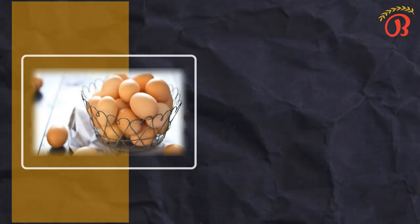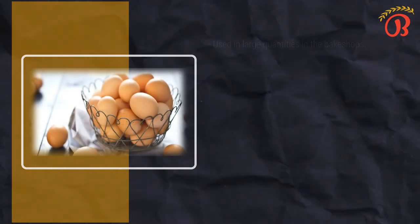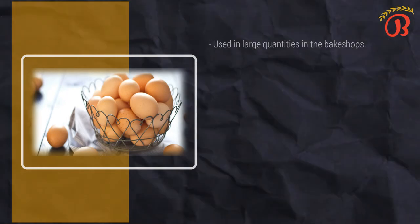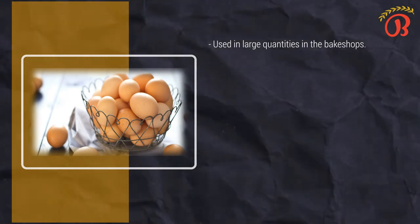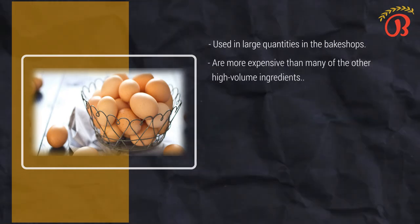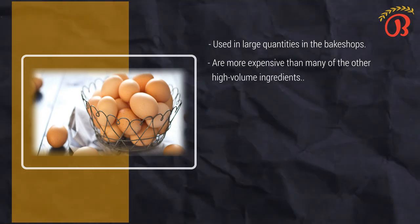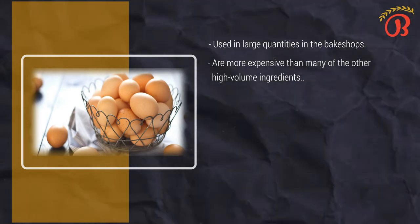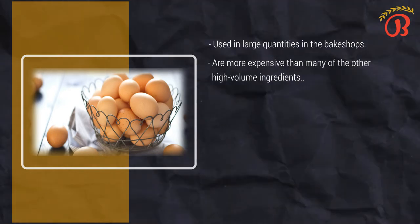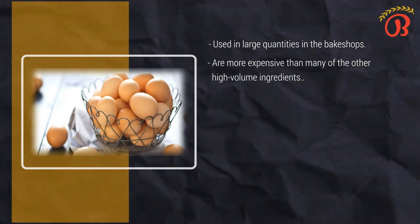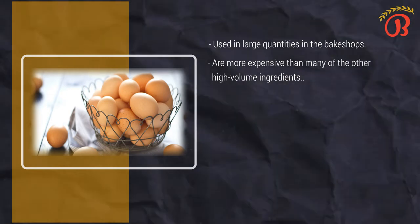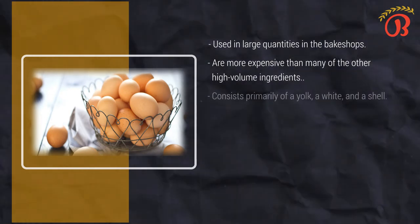Now let's talk about eggs. Eggs should be well understood by the baker because they are used in large quantities in the bake shop and are more expensive than many other high-volume ingredients such as flour and sugar. For example, half or more of the ingredient cost of the average cake batter is for the eggs. Let's understand the composition of eggs. A whole egg consists primarily of a yolk, a white, and a shell.